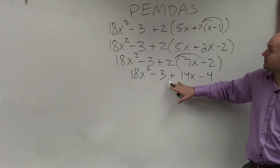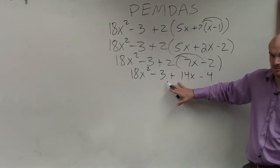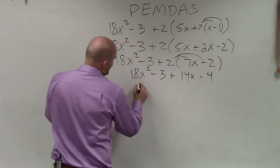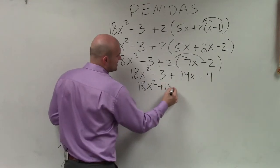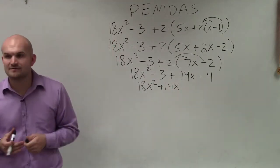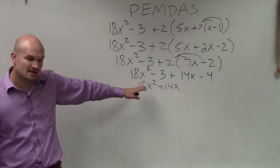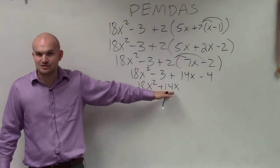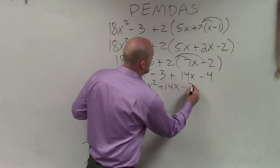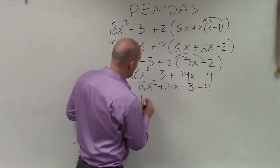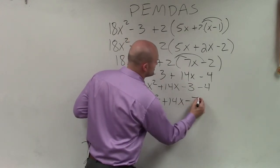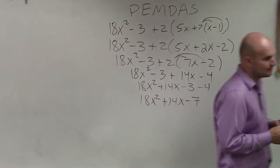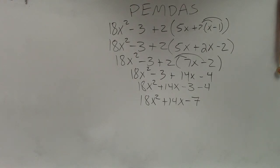Now we combine our like terms. We have 18x², but then we have positive 14x. Those are not like terms - they do not have the same variable factors. x² has variable factors x times x, where 14x just has x. Then I have -3 - 4. So my final answer is 18x² + 14x - 7. And that would be your simplified answer.